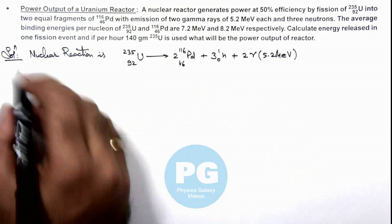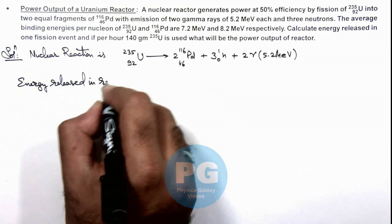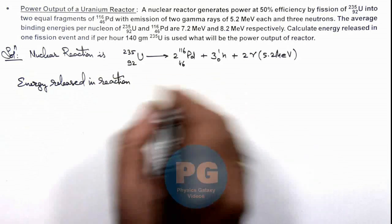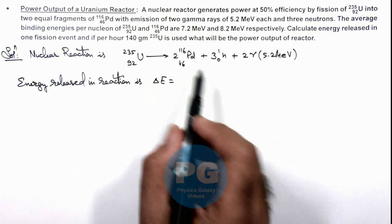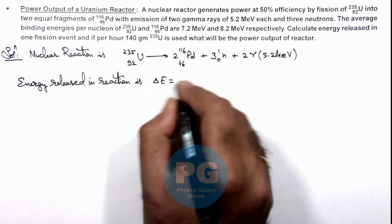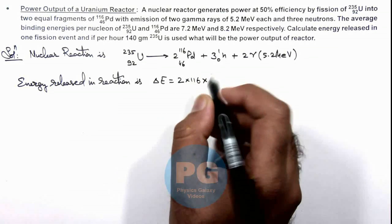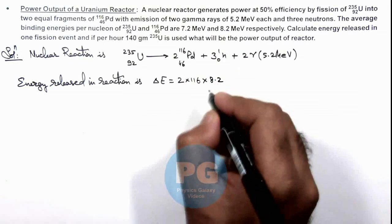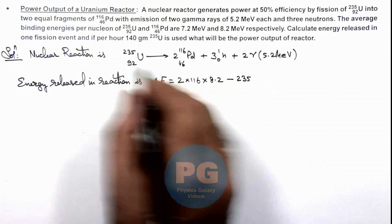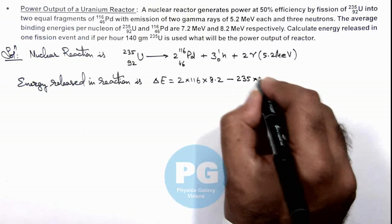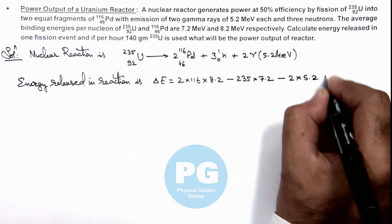Now we can calculate the energy released in the reaction, which is also termed as the Q-value of the reaction. This delta-E we can write as: the total binding energy of palladium will be twice of 116 multiplied by the binding energy of palladium, which is 8.2 MeV, minus 235 times the binding energy of uranium, which is 7.2 MeV, minus the energy released in the form of gamma rays, which is 2 into 5.2 MeV.